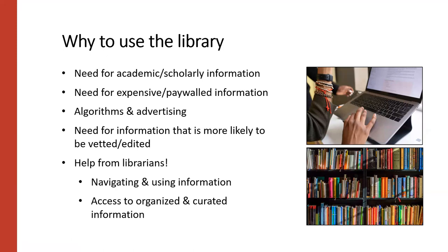You might want to use library resources when you're looking for information that tends to be more vetted, edited, or evaluated. Information in library resources is much more likely than information on the web to have undergone some kind of review or vetting process during creation and publication — meaning someone has looked at it to determine its quality and reliability. Scholarly articles have usually gone through a peer review process; newspapers, books, and other publications have editors. That layer of review isn't completely infallible, but resources you find through the library are typically much more closely examined than other resources, which is helpful when you need reliable, high-quality sources for academic or scholarly research. You should still evaluate your sources using the criteria we talked about.